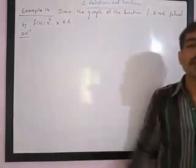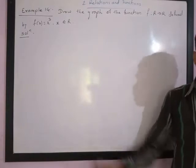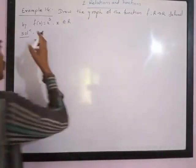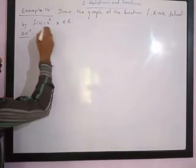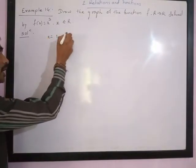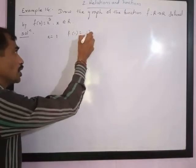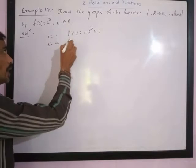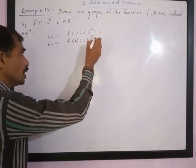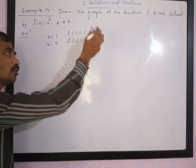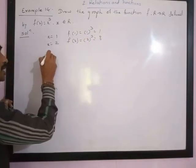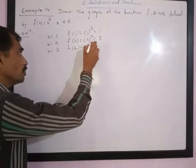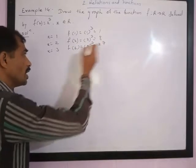So here we have f of x equal to x cube. Let us find the values. f(1) = 1 cube = 1. For x equal to 2, f(2) = 2 cube = 8. If you take x equal to 3, f(3) = 3 cube = 27, and so on.